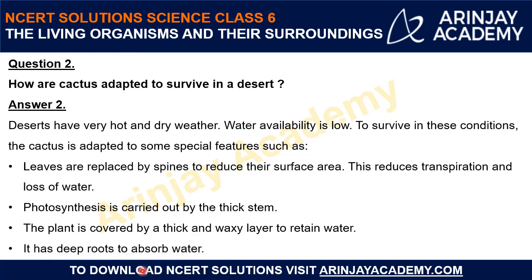The third feature: the plant is covered by a thick and waxy layer to retain water. The overall plant is covered with a thick and waxy coating, so they can retain and store water and prevent its loss. Lastly, cactus has deep roots to absorb water. Since water is not sufficiently available in deserts, their roots are modified to go deep down and absorb water from large depth. These are the different features with which the cactus has modified itself naturally to survive in extreme desert conditions.